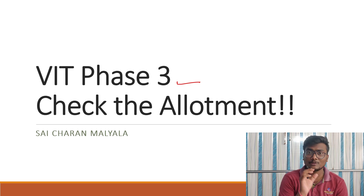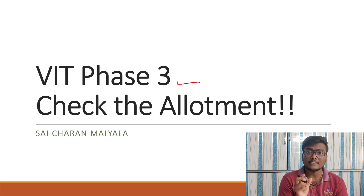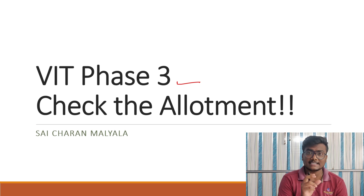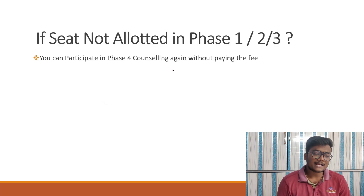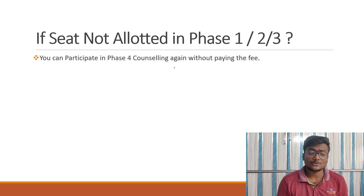just log in there. You will have a button called 'Seat Allotment' — just go there and check what seat has been allotted to you. So many will be asking: if I didn't get allotted, can I participate in phase 4?